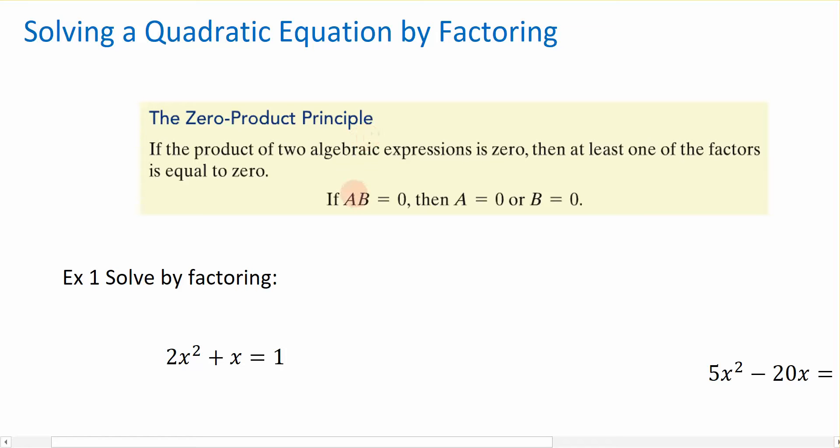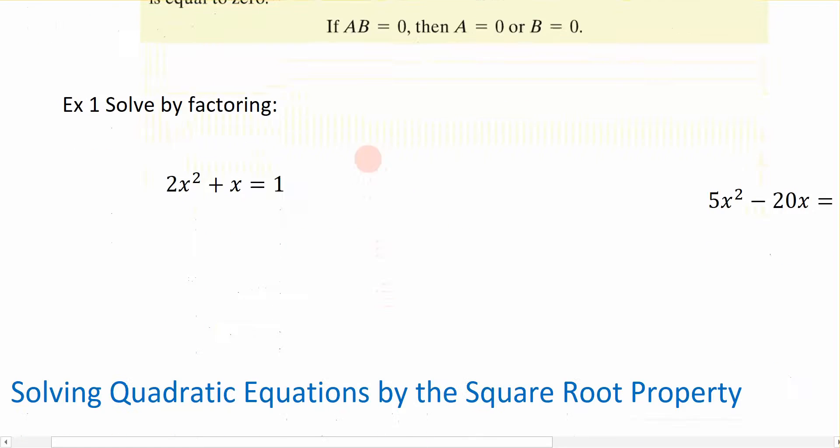That principle says that if I have two factors that equal zero, then either factor A must be equal to zero or factor B must be equal to zero. And that is going to allow me to solve my equations by applying this property or this principle. So let's get started.